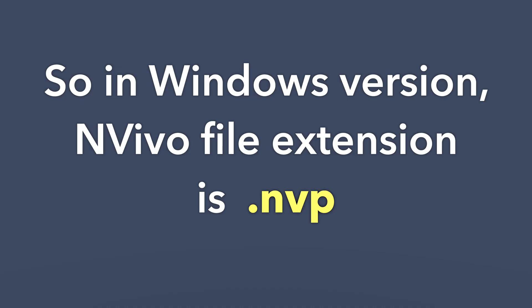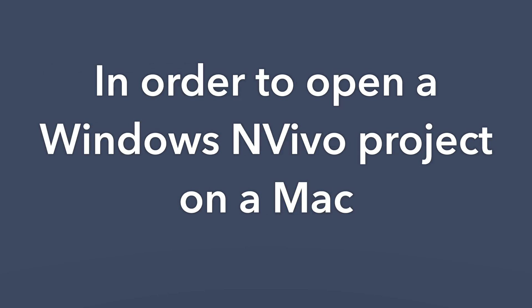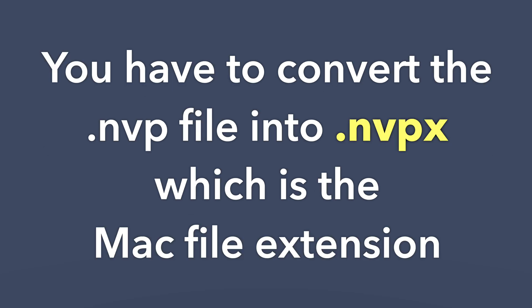In the Windows version the file extension is called .NVP. In order to open a Windows project on a Mac you have to convert the Windows file — the .NVP — into a .NVPX, which is the Mac file extension. You can only do this on the Windows version, and it's pretty straightforward: you go to File, Copy Project, and choose from that menu to convert it to a Mac version. Then you can send the Mac version to your Mac computer or your colleague's Mac computer and they should be able to open it.